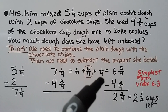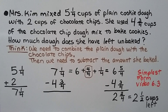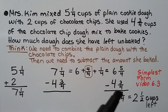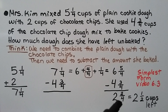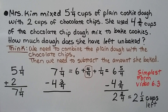Then we have our 1 fourth, giving us 6 and 5 fourths. Now we can subtract 4 and 3 fourths. 5 minus 3 is equal to 2, so we have 2 fourths, and 6 minus 4 is equal to 2. We have 2 and 2 fourths. We need to write it in simplest form by finding the greatest common factor for 2 and 4, then dividing by it, to get 2 and 1 half cups left. If simplest form is confusing, video 6.3 is linked in the description.